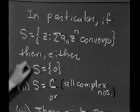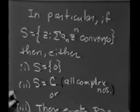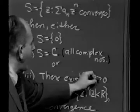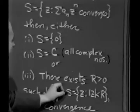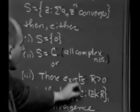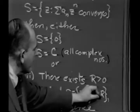Usually, you'll get something in between these two extremes. And that's the case, like just in the real case, there exists a number capital R greater than 0, such that the set S consists of all of those z's such that the absolute value of z is less than R.